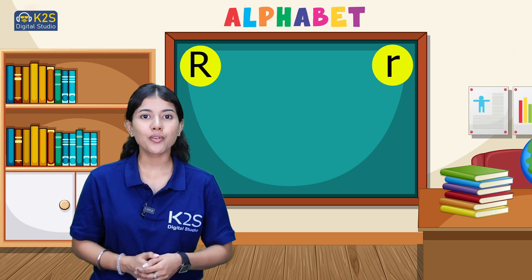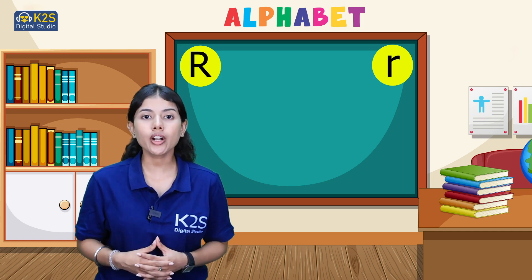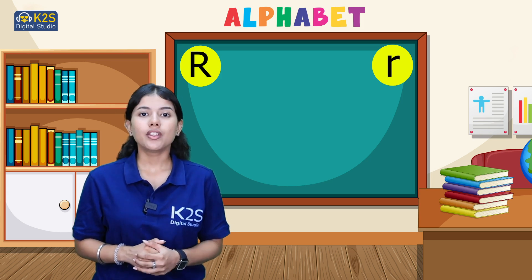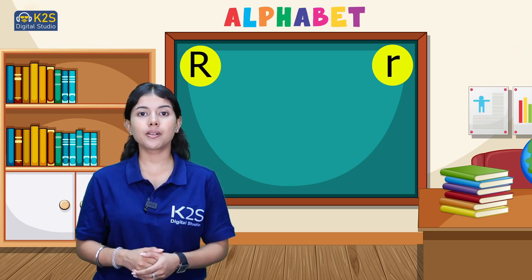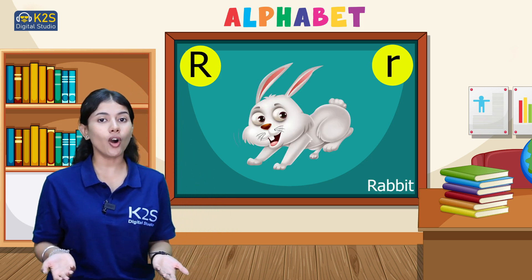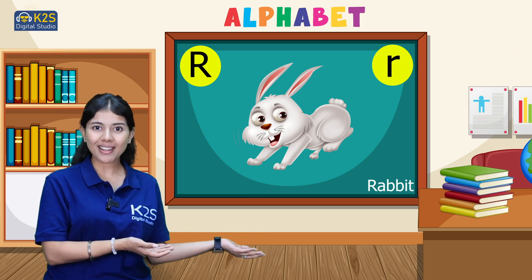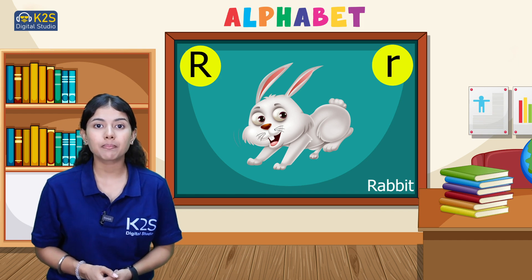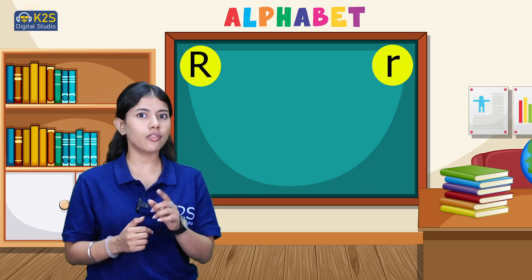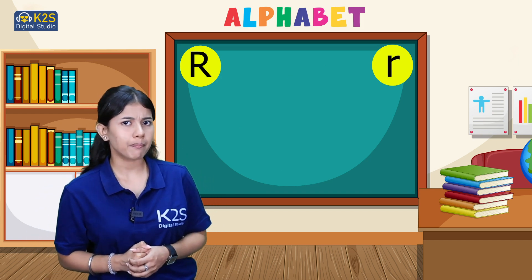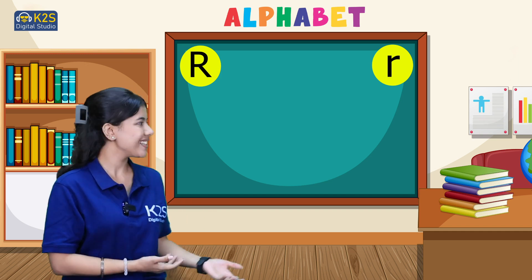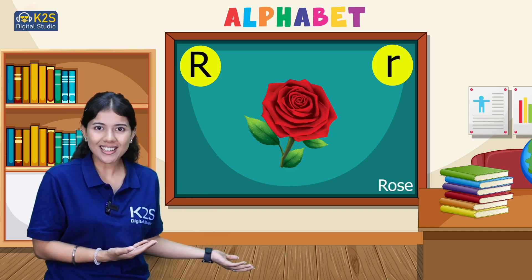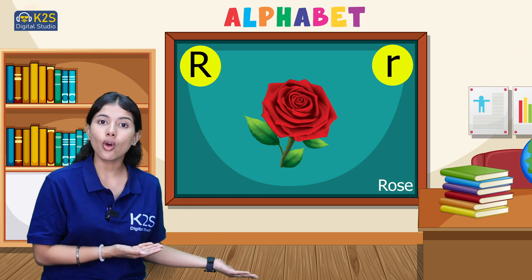Now we will move forward and talk about some words which start with letter R. The first word is R for Rabbit. The second word is a flower — can you guess it? R for Rose. Beautiful, isn't it? R for Rose.